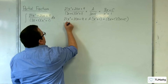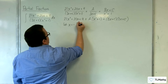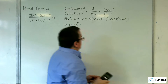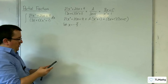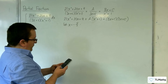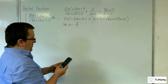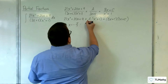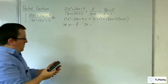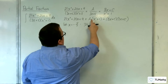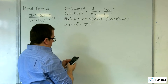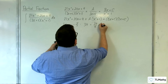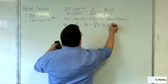Let's first put x as minus 5 thirds, which will knock out that bracket. Substituting into the left hand side: 21 lots of minus 5 thirds squared plus 20 lots of minus 5 thirds plus 9, we get 34. On the right hand side we get minus 5 thirds squared plus 1, so 34 ninths times a, which means a is equal to 9.